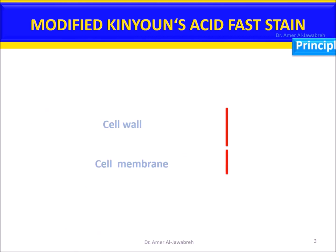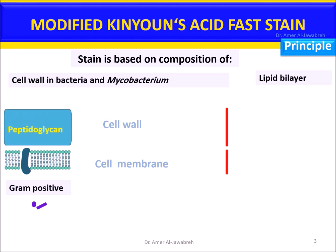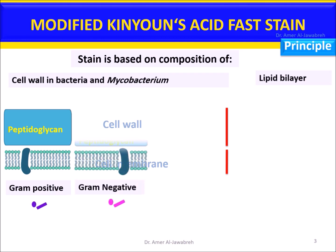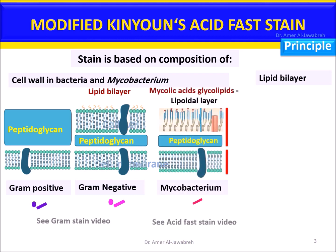Principle: The stain is based on the composition of the cell wall in bacteria and Mycobacterium, and the lipid bilayer in Cryptosporidium. Gram-positive bacteria have a thick peptidoglycan cell wall. Gram-negative bacteria have a thin peptidoglycan cell wall with a thick lipid bilayer. Mycobacterium has a thin peptidoglycan cell wall with a lipid bilayer composed mainly of mycolic acids and glycolipids, forming a sticky, waxy, lipoid layer.